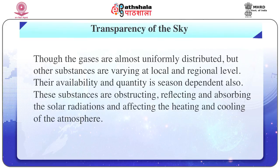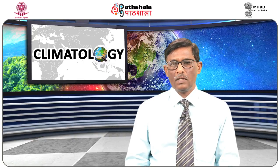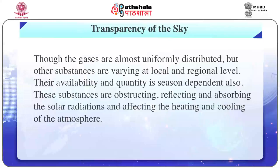Now let us talk about the transparency of the sky. Apart from the gases, several other minute suspended particles and water vapors constitute the atmosphere. Though the gases are almost uniformly distributed, other substances are varying at local and regional level. Their availability and quantity is also season dependent. These substances are obstructing, reflecting, and absorbing the solar radiations and affecting the heating and cooling of the atmosphere.